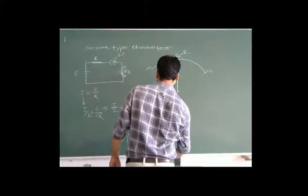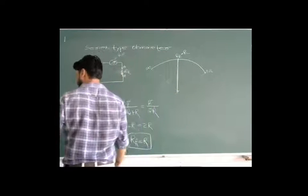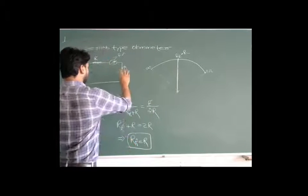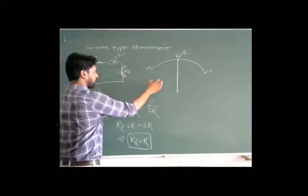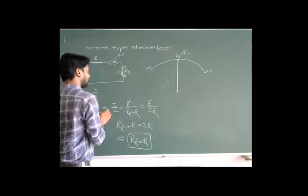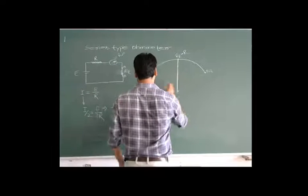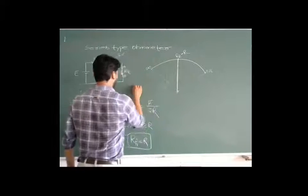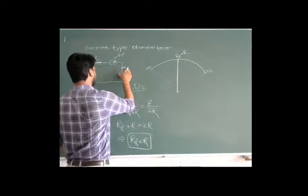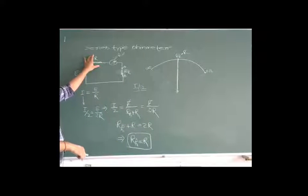We can find out the value of this resistance if the pointer indicates half-scale deflection. When the pointer indicates half-scale deflection — that is, when it indicates I/2 — it means the value of the connected resistance equals the value of R. Both the two resistances are equal.